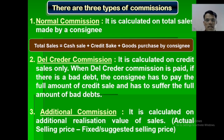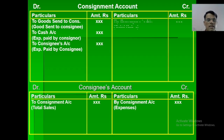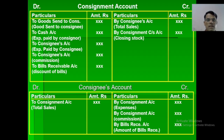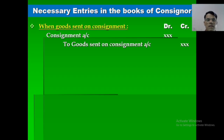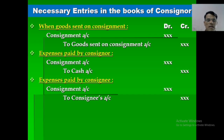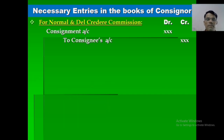In the consignment account: debit side includes goods sent on consignment, expenses paid by consignor, expenses paid by consignee, and commission paid by consignee. Credit side includes sales by consignee, bills discount, closing stock, and the missing amount goes to the Profit and Loss account. Necessary journal entries in the books of the consignor: goods sent on consignment — consignment account debited to goods sent on consignment account. Expenses paid by consignor — consignment account debited to cash and bank account. Expenses paid by consignee — consignment account debited to consignee's account, same for commission. When account sales are received — consignee account debited to consignment account. For normal and del credere commission — consignment account debited to consignee account.